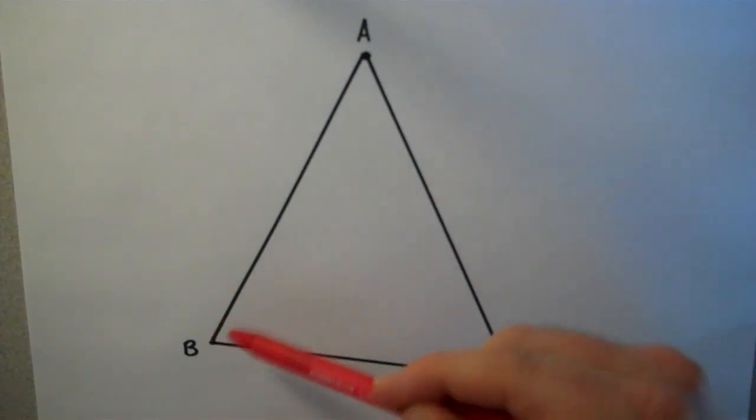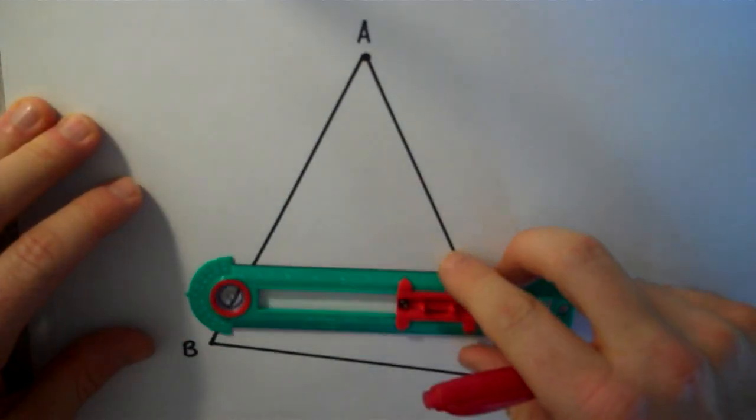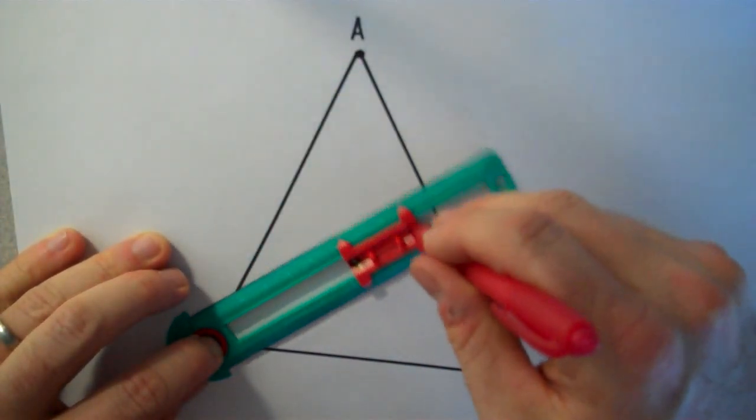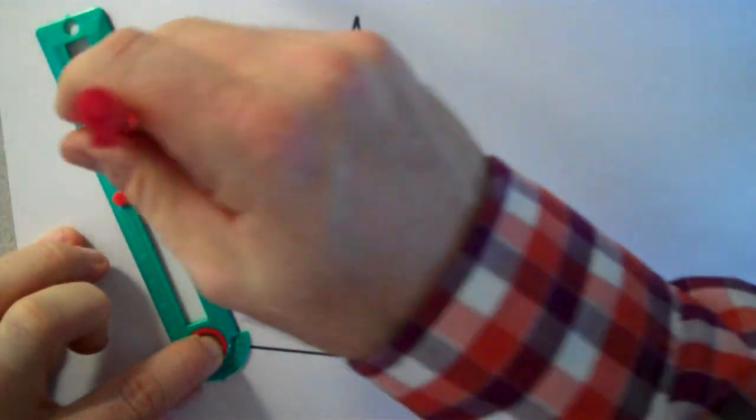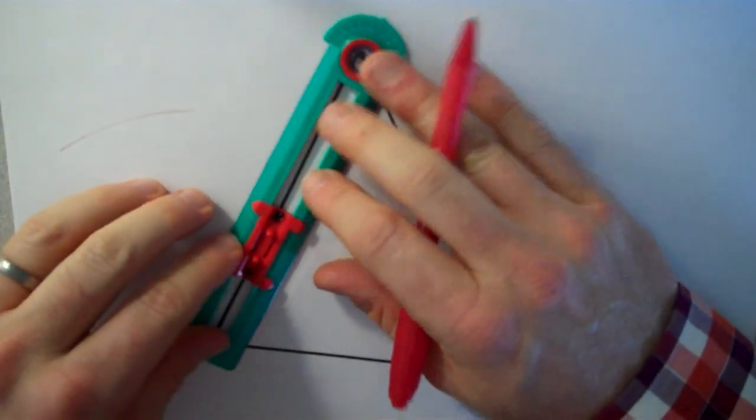In order to find the midpoint of any segment, you're just going to do a perpendicular bisector. I'm going to put the point of my compass here at B, open it up more than halfway, and start the construction for perpendicular bisector. I'm going to do the same thing on the other side.